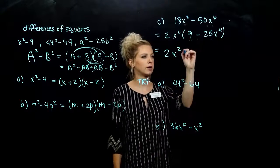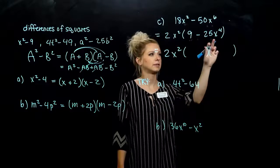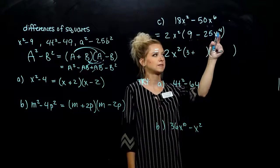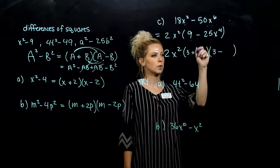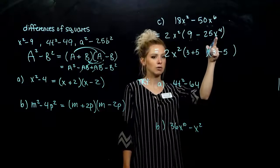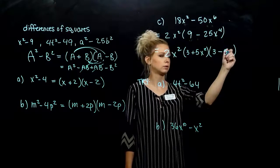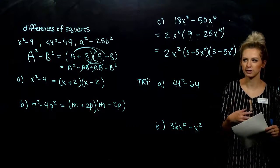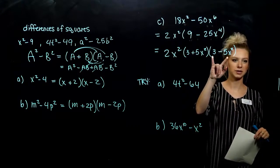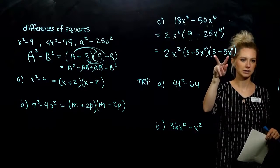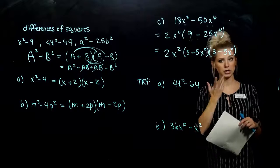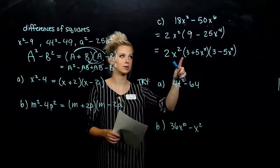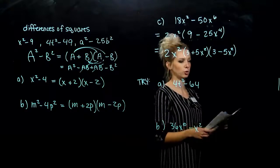So what are we looking at? 2x squared times the factored binomial. Square root of 9 is 3, we need alternating signs, and the square root of the last term: square root of 25 is 5, and square root of x to the fourth is x squared. At the end, we should always ask: can I factor it any farther? Looking at my binomial — it's a difference, but are they perfect squares? No, so we can't factor it any farther. But we should always look. If you're not sure, FOIL it out and make sure you get back to the original.